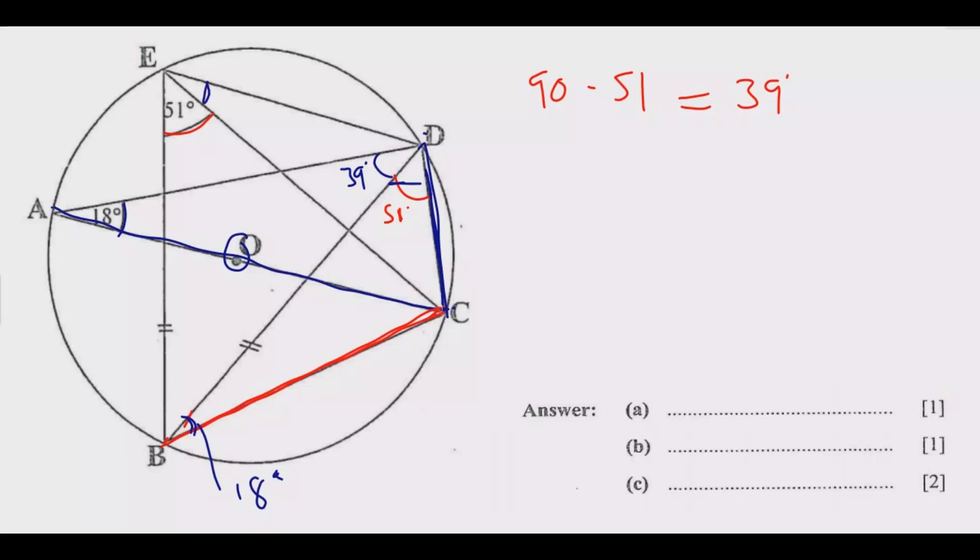Again, starting from C and D and hitting this point, that angle should also be 18 degrees because we have this minor segment and the major segment. So this angle is 18 degrees.